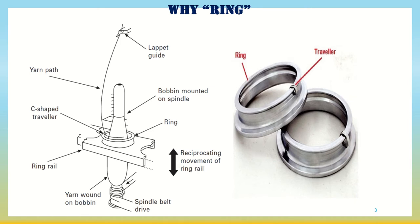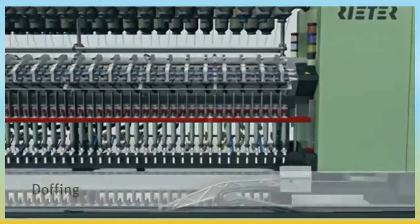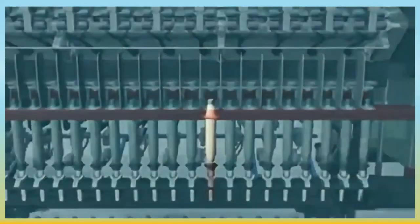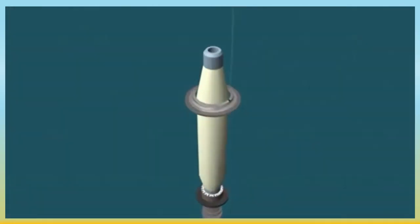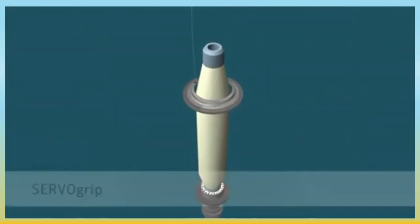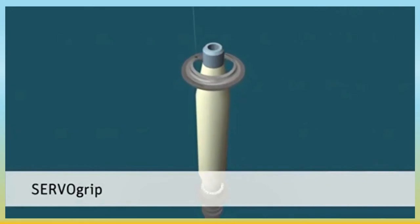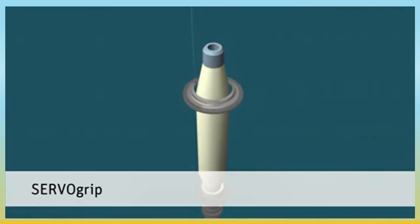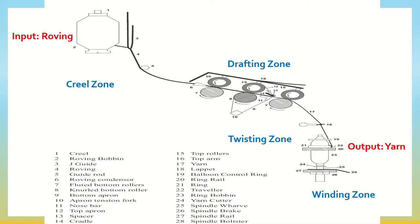The ring is circular in cross-section and the top portion is flattened in such a way that a C-shaped traveler can travel along with the rotation of the spindle. The traveler is a very tiny element that moves over the ring surface, and each revolution of the traveler imparts one turn of twist on the fiber.